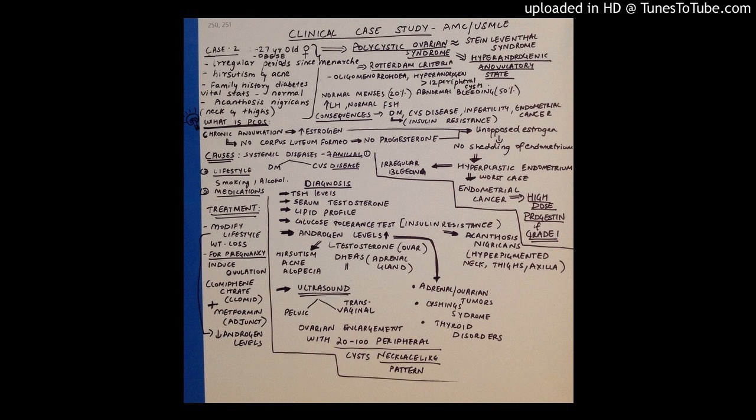Apart from all these diagnostic tests, you have one test which is the ultrasound, which is very important to diagnose the polycystic ovaries. Your ovaries are going to be enlarged. Ultrasound can be done either pelvic ultrasound or your transvaginal ultrasound will help you to detect the enlarged ovaries. There will be an ovarian enlargement. Like I told you earlier in the beginning, there are these peripheral cysts seen in the ovary.